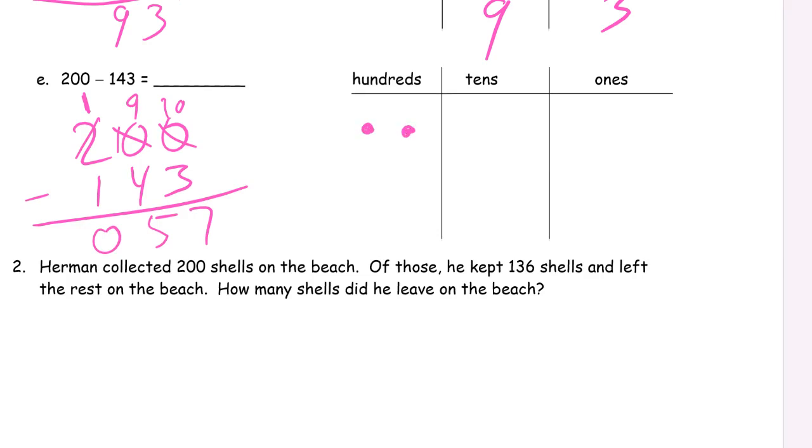Let's draw it. 2 hundreds. Unbundle a 100. Get 10 tens. Unbundle a 10. Get 10 ones. Now we can cross out 3 ones and 4 tens and 100. What do we have left? 5, 6, 7 ones. And 5 tens. And there's no hundreds left. 57.